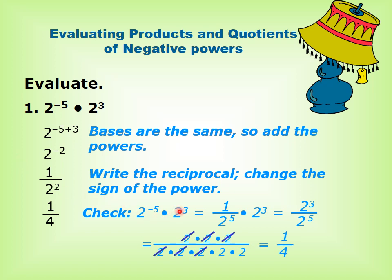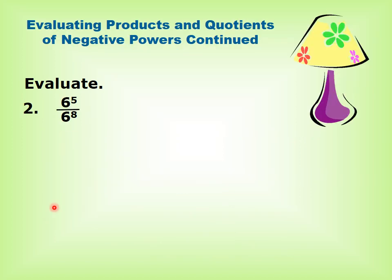To check the answer another way: 2 power negative 5 times 2 power 3. Find the reciprocal: 1 over 2 power 5 times 2 power 3. This gives 2 power 3 over 2 power 5. Since 2 power 3 means 2 multiplied by itself 3 times, and 2 power 5 means 2 multiplied by itself 5 times, cross out 3 twos from the numerator and 3 twos from the denominator, giving 1 over 4. Same answer.